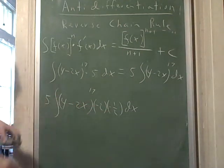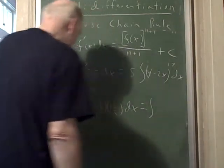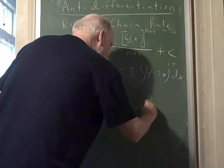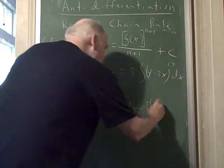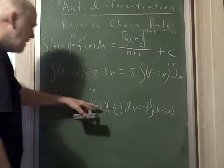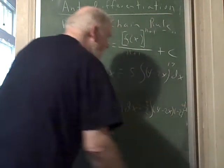I'm going to factor out the negative 1/2, and I'm going to end up with the antiderivative of—I have negative 5/2 on the outside, but I've got 4 minus 2x to the 17th power times negative 2. Can you see that? Negative 2 dx.